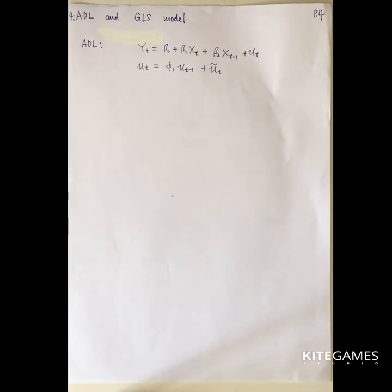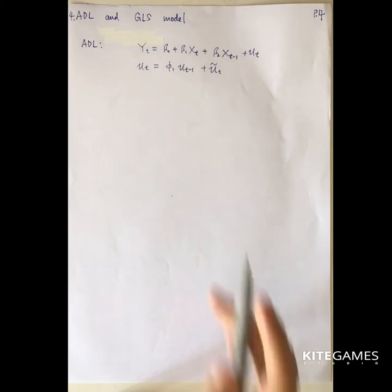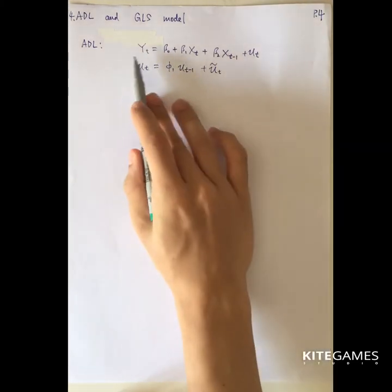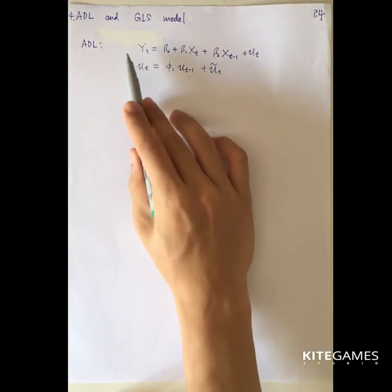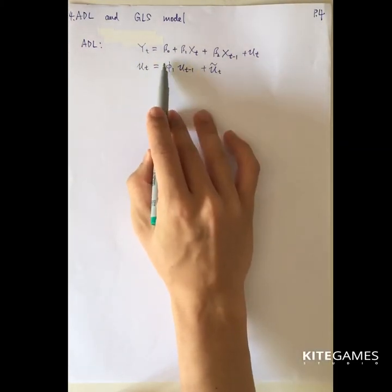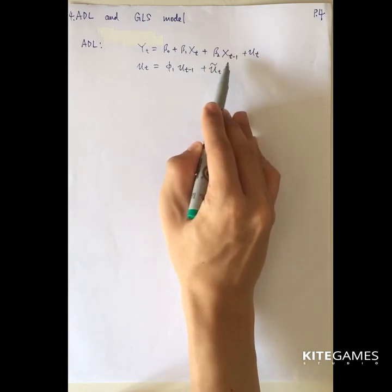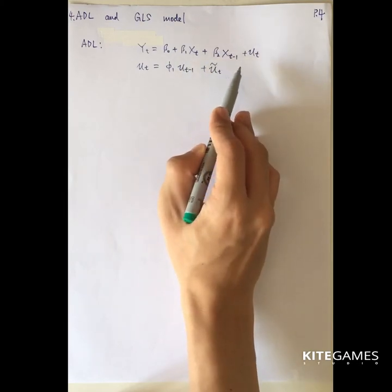Next we will talk about the ADL and GLS model, which stands for the autoregressive distributed lag model and the generalized least squares model. So this is the original ADL model: yt is equal to beta_0 plus beta_1 xt plus beta_2 xt minus 1 plus ut.